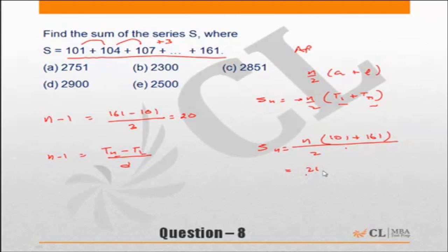Sum of terms is 21 into 161 into 162 by 2, which is nothing but 21 into 131. Not a difficult calculation. I am sure you should be able to solve it.